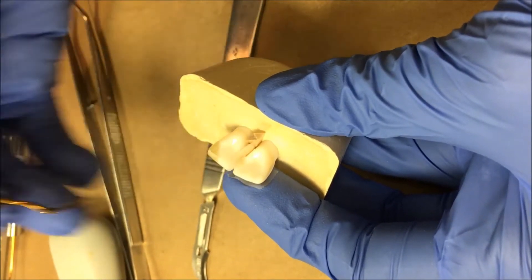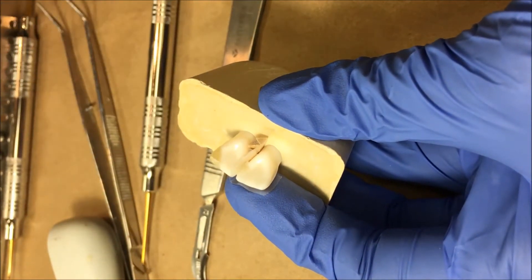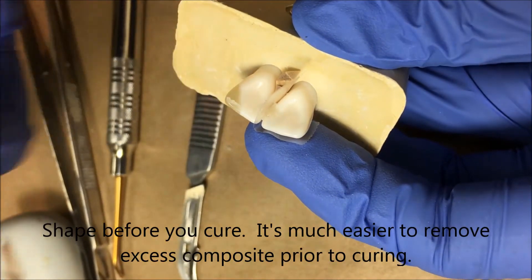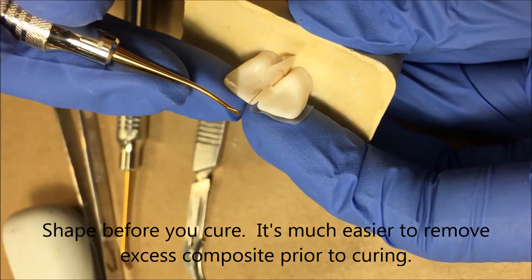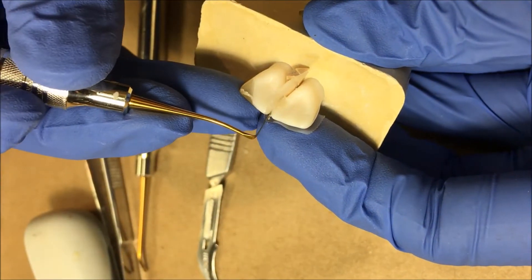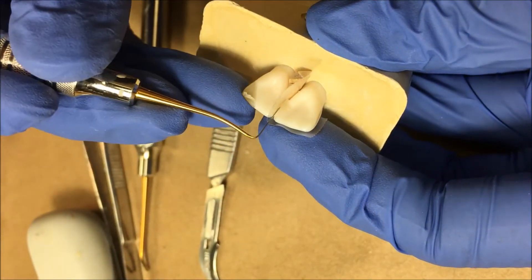Remember when I told you not to rush on this? This makes a big difference. I can also use a thinner bladed instrument as well and I can actually start creating just a little bit of my embrasure. Remember that one of the places you tend to get a lot of flash is at that incisal edge.